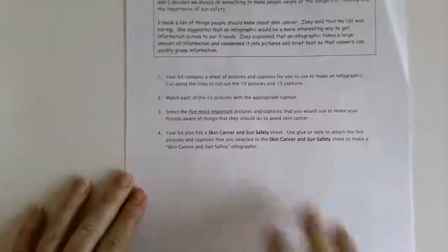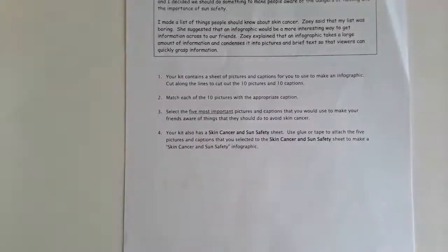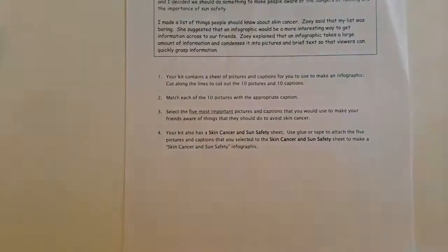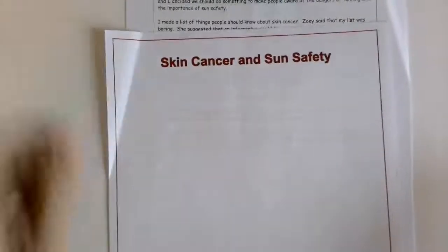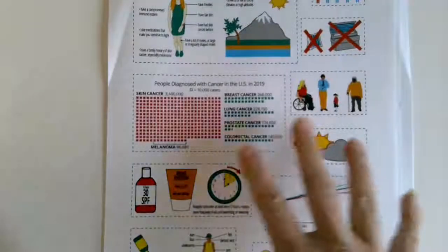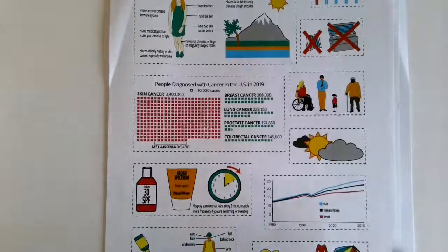Also, on this assignment, right here on the back, the last page, it says your kit contains sheets of pictures to help you make an infographic. So what it is is these pages come - it comes with a piece of paper that says 'Skin Cancer and Sun Safety,' then it has all of these different pictures to make infographics.